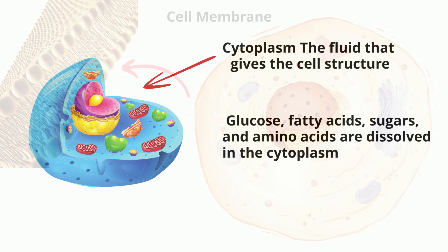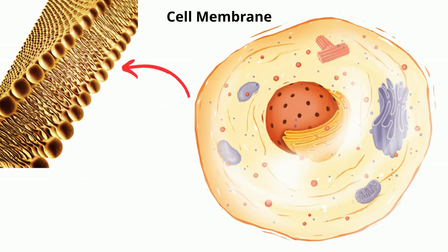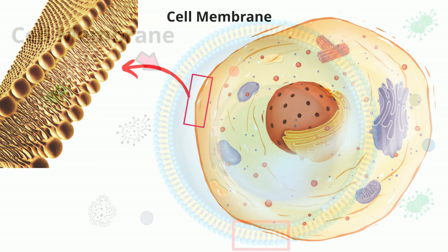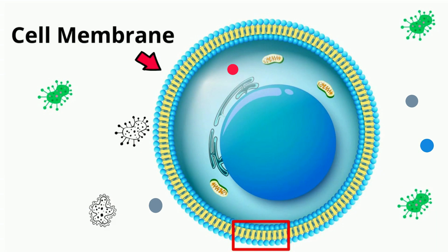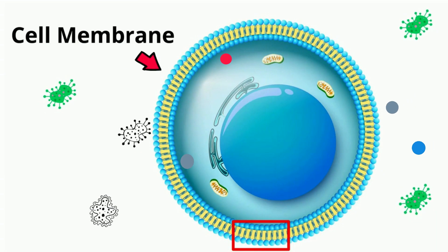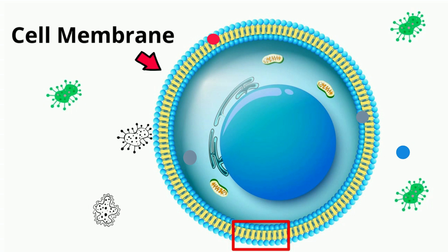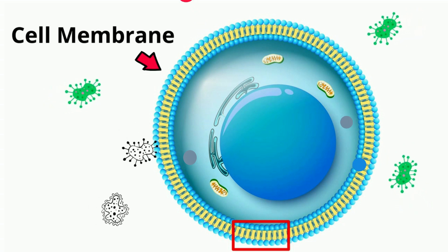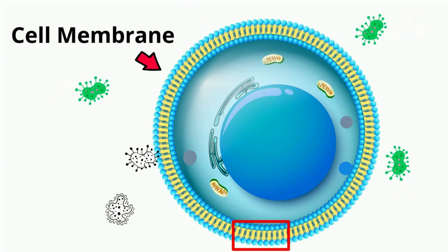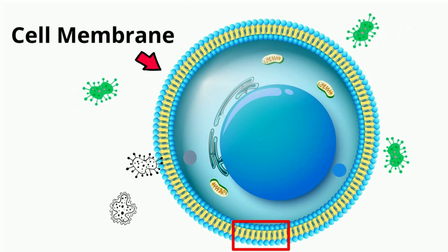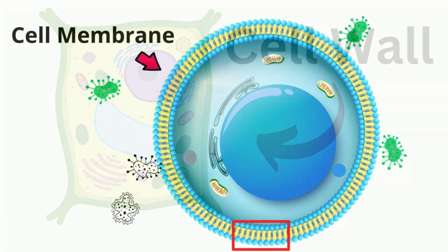The cell membrane is a membrane that surrounds the cell. Think of it as a protective barrier. It is the main organelle responsible for maintaining homeostasis in the cell by regulating the movement of materials into and out of the cell.